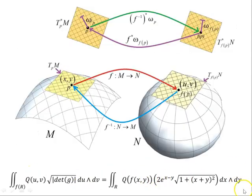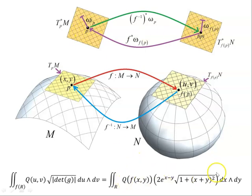These two integrals give us the same result — they are equal to each other. So if we take our two-form, du wedge dv times all the prefactor — we could call this omega at F of P — and pull it back under F to omega at P, then the integral of omega F of P over here equals the integral of omega P over here. That's what the pullback helps us do in terms of integration: the map F taking a region R on M to a region f of R on N, with the corresponding forms integrated over each region giving the same value.